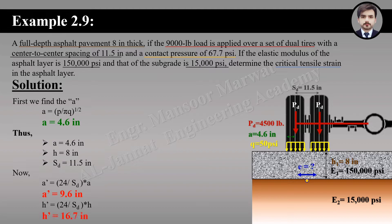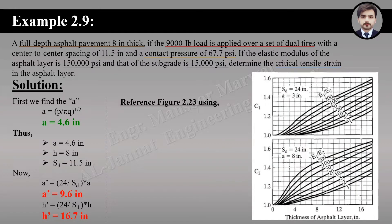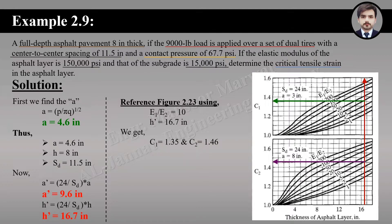And H-dash equals 16.7 inches. Next we find the conversion factor C. Reference figure 2.23 has two input parameters: the modulus ratio and the modified thickness. Here the modulus ratio is 10 and the modified thickness is 16.7 inches.